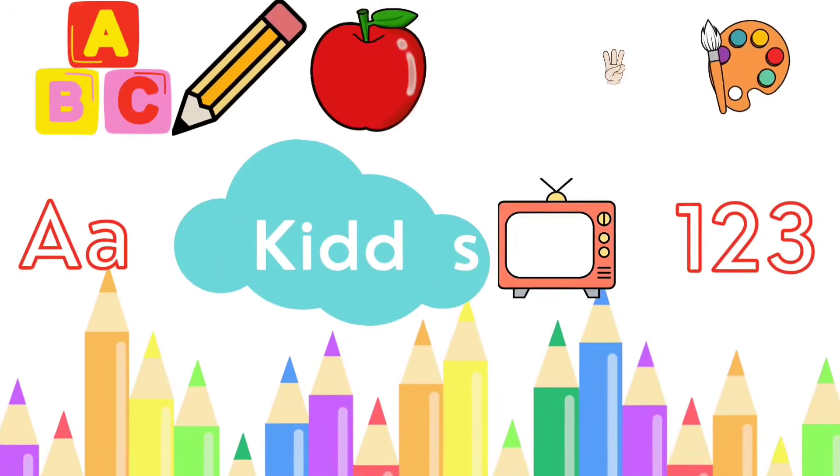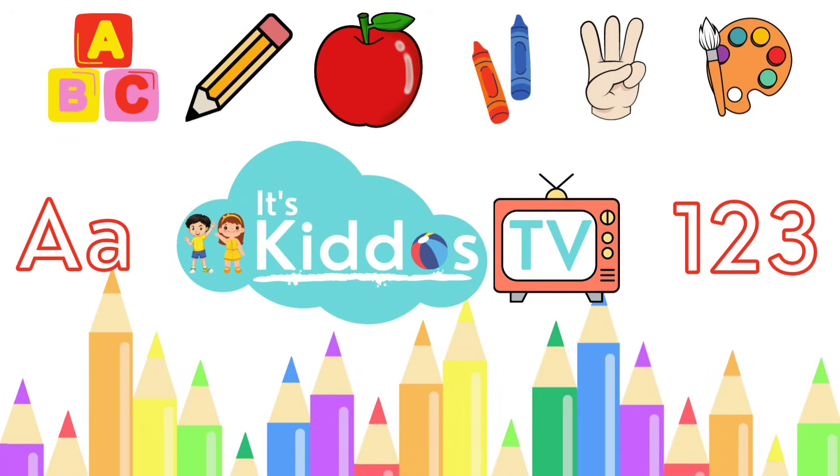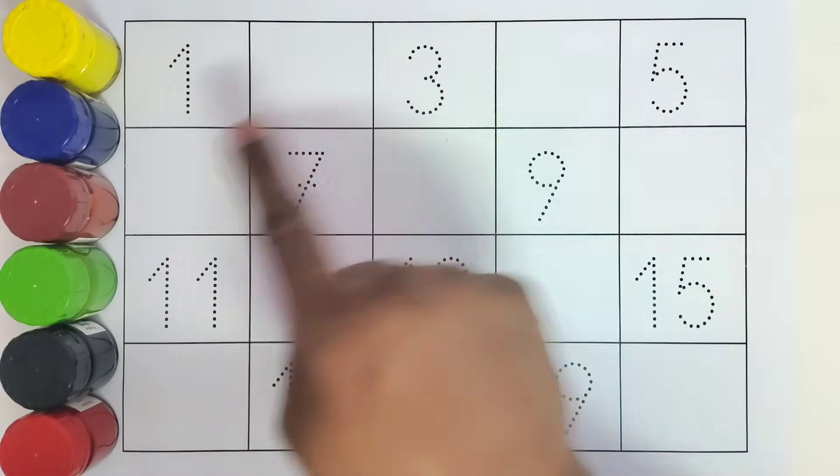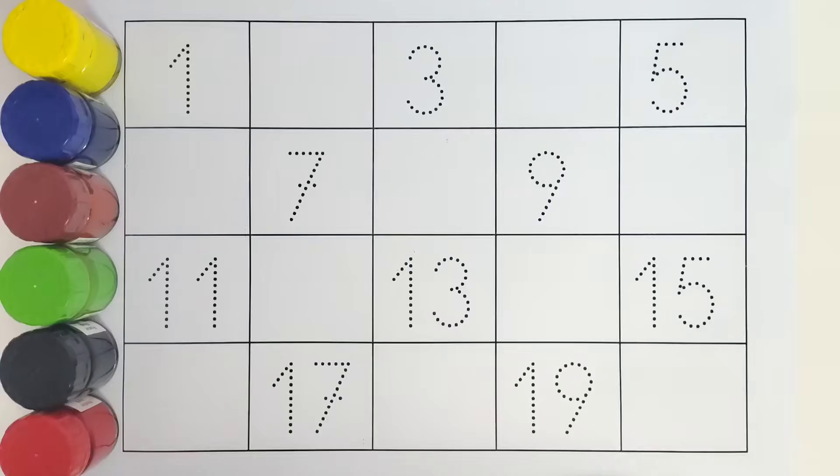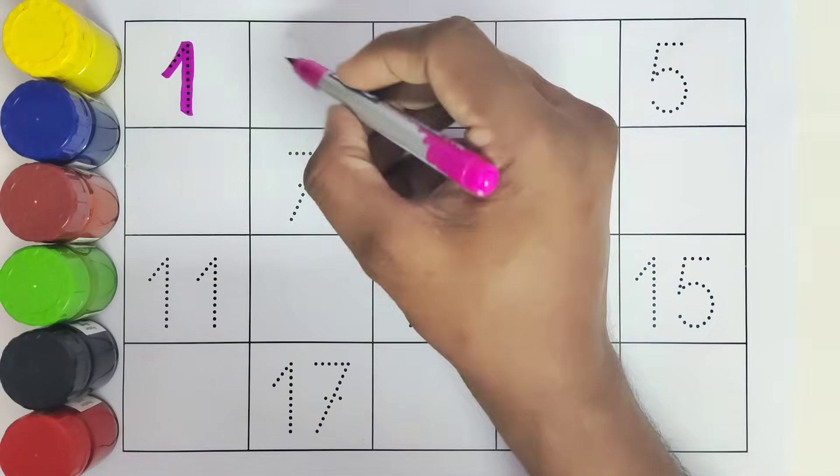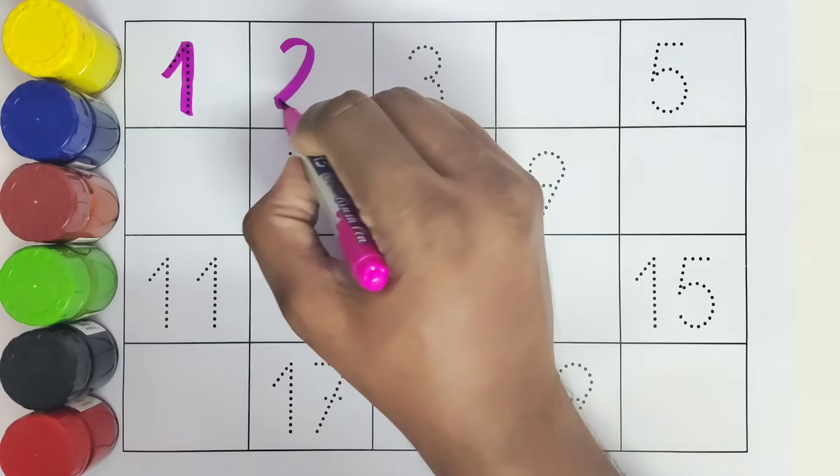Hello kids, welcome to Kiddos TV. Today we are going to learn numbers. We will be coloring from 1 to 20 and find these missing numbers. Let us get started. This is 1. What comes after 1? 2. This is 2.